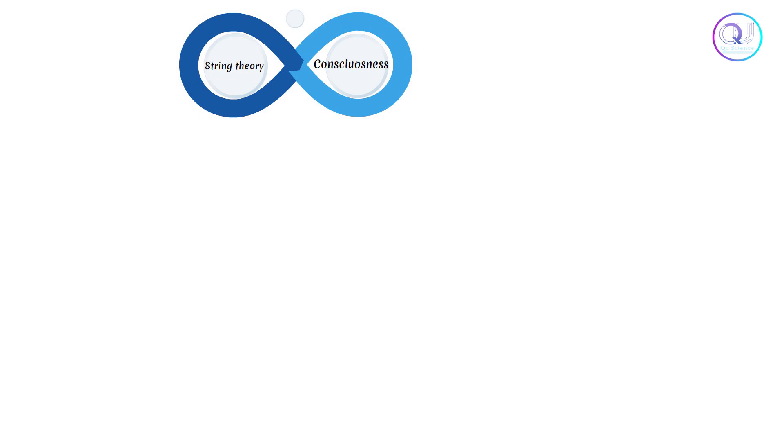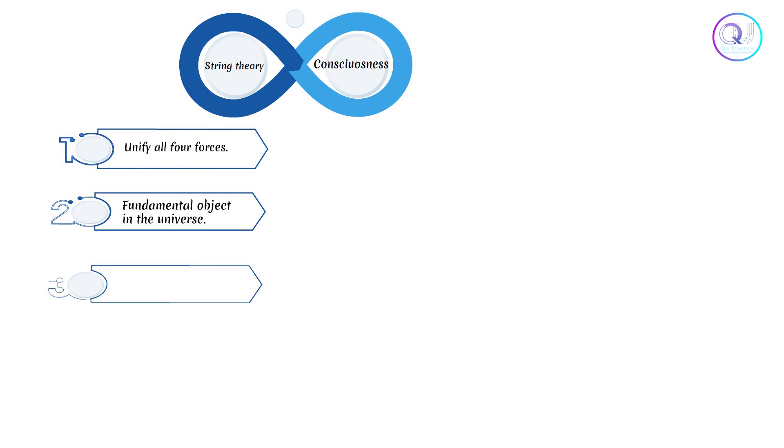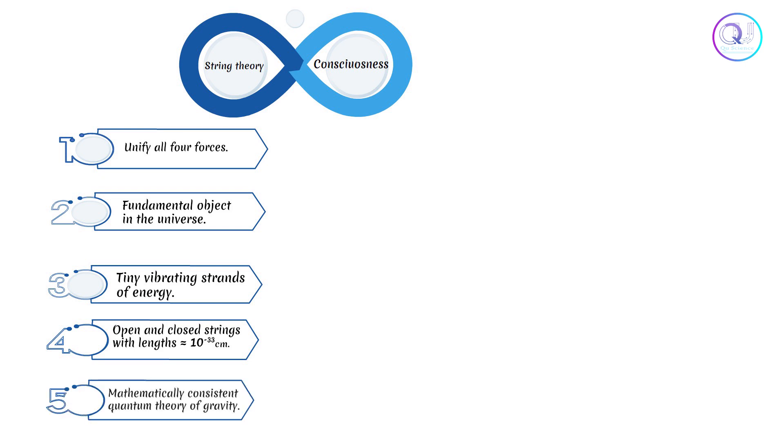To explore symmetries between these two subjects, at its core it is a relatively simple idea. Let us review five essential aspects of string theory: first, string theory attempts to unify all four forces. Second, a string is the only fundamental object in the universe—everything is made of strings. Third, string theory implies that all particles are made of tiny vibrating strands of energy. Fourth, the fundamental objects of string theory are open and closed strings with lengths of approximately 10 to the minus 33 centimeters. Fifth, string theory is the only known mathematically consistent quantum theory of gravity.